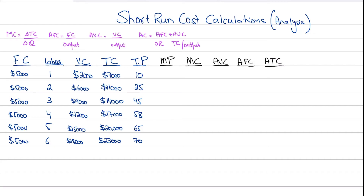Hi guys, in this video we are going to be discussing short run cost calculations. We have already seen in the previous video what is marginal cost, average fixed cost, average variable cost, and average cost.